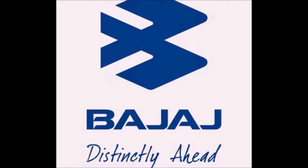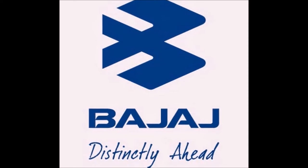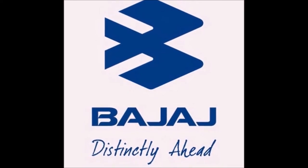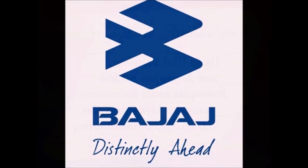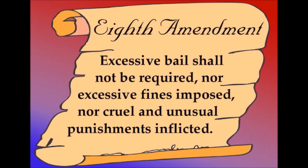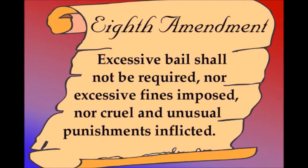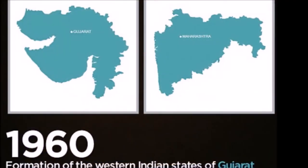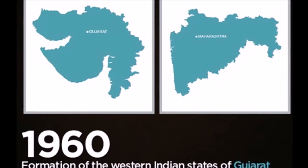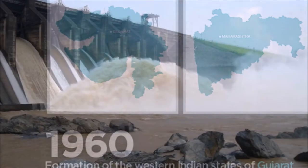1959: Bajaj Auto obtained a license from the Government of India to manufacture two and three wheelers. The eighth amendment of the Constitution of India also took place. 1960: Gujarat and Maharashtra were formed as separate states.